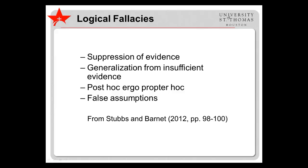Suppression of evidence: being selective in the presentation of evidence, such as only citing studies that support one's position and neglecting studies that contradict it. Generalization from insufficient evidence: based on a limited amount of evidence — for example, a single study with a small sample size — drawing broad conclusions.